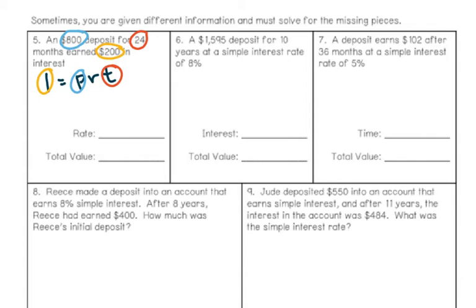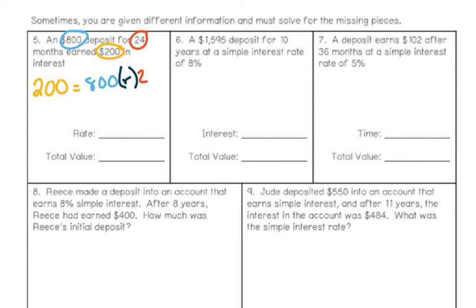In this problem, the $800 deposit is our principal, color-coded in blue — that's the initial amount put into the account. Next, I see 24 months as the time; I've got to remember I want time in years, so 24 months converts to 2 years. We earned $200 in interest, which is typically what we've been solving for. This leaves my unknown as R, the rate. I've rewritten the formula substituting the pieces of information in where they go, color-coded so you can see where each piece came from.